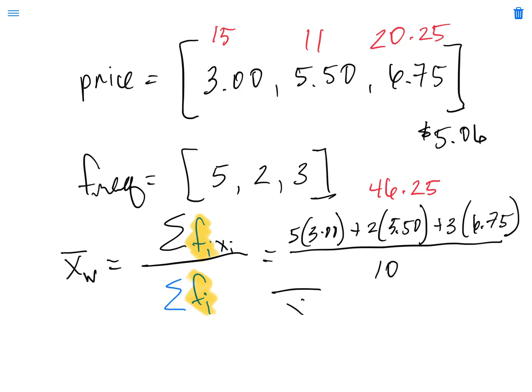We divide the forty six point twenty five by ten, we get a weighted mean equal to four dollars and sixty three cents, and that is absolutely in dollars because we have both in the numerator and in the denominator the sum of the weights.